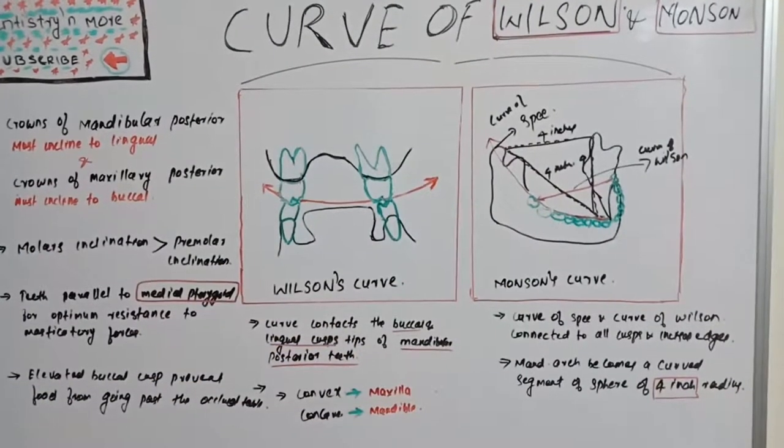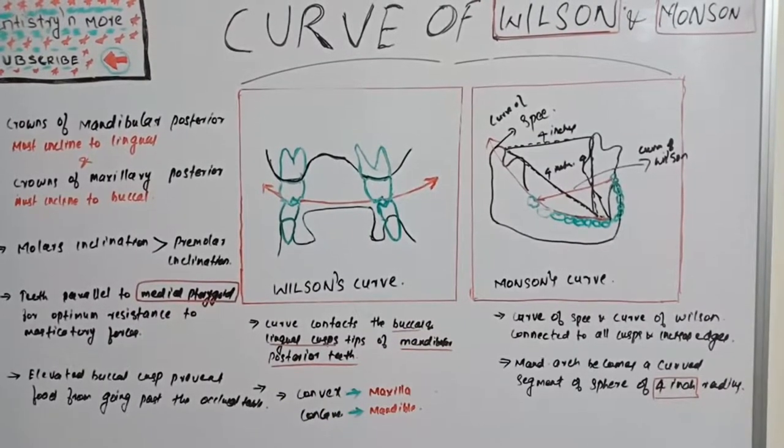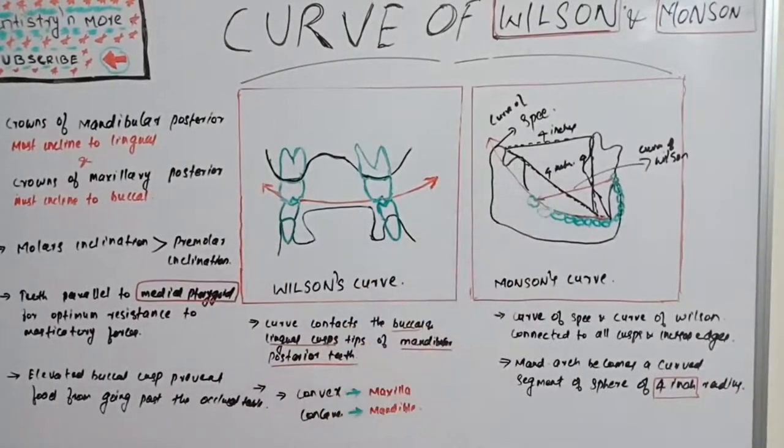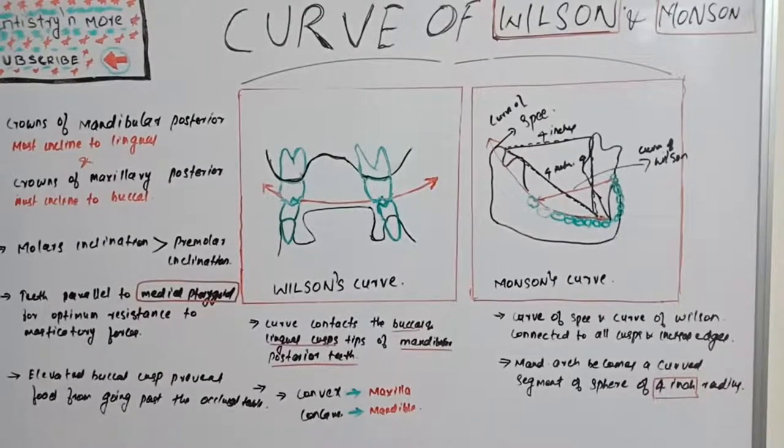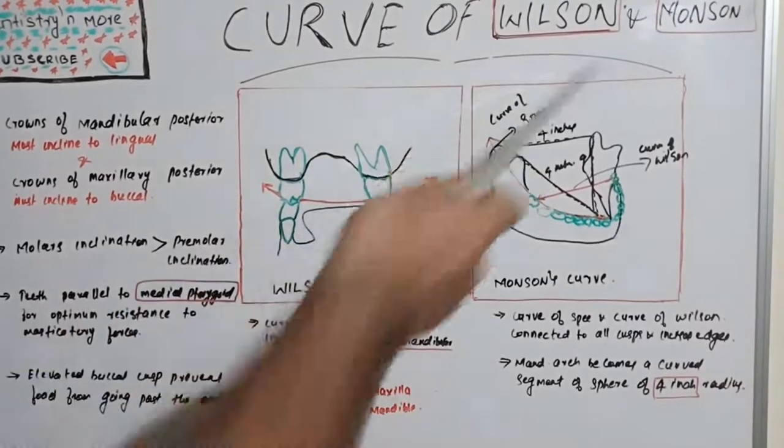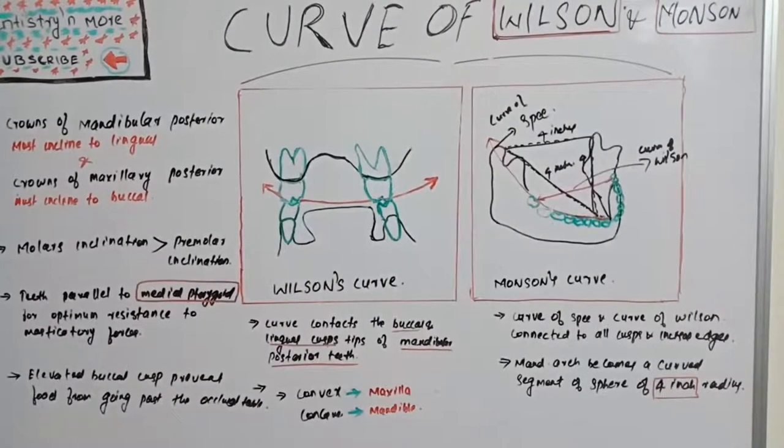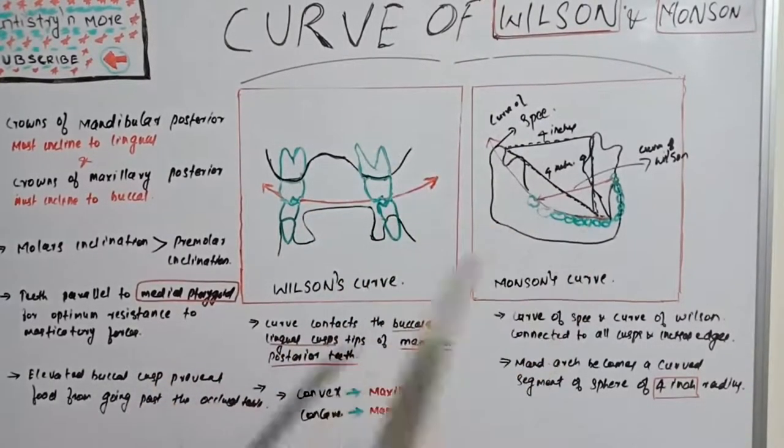We can also say that the curve of occlusion in which cusps and incisal edges touch or conform to a segment of sphere of 8 inches diameter. I was talking about 4 inches radius, but 8 inches diameter of sphere with its center in the region of glabella. Glabella is in the forehead between the frontonasal segment. It becomes an 8-inch sphere or 4-inch equilateral triangle.